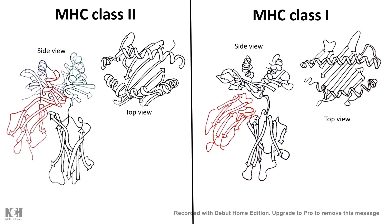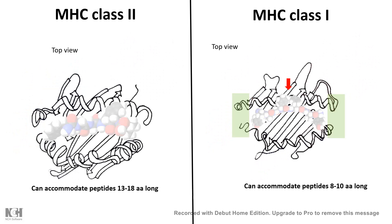The big difference lies in the peptide binding groove. MHC class 2 molecules have a bigger peptide binding groove compared to MHC class 1.